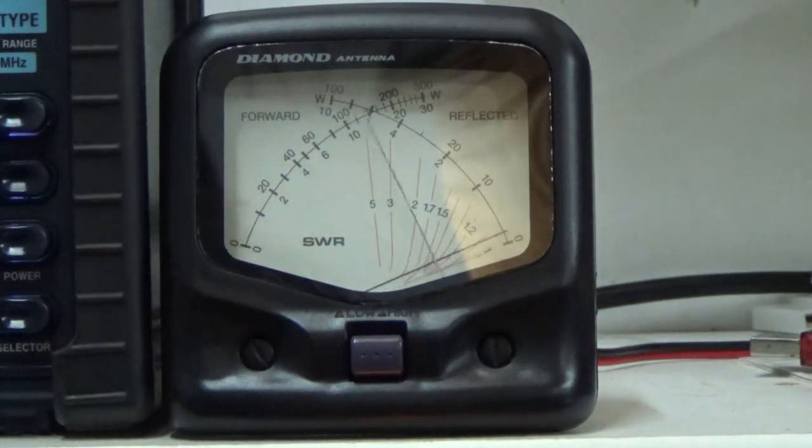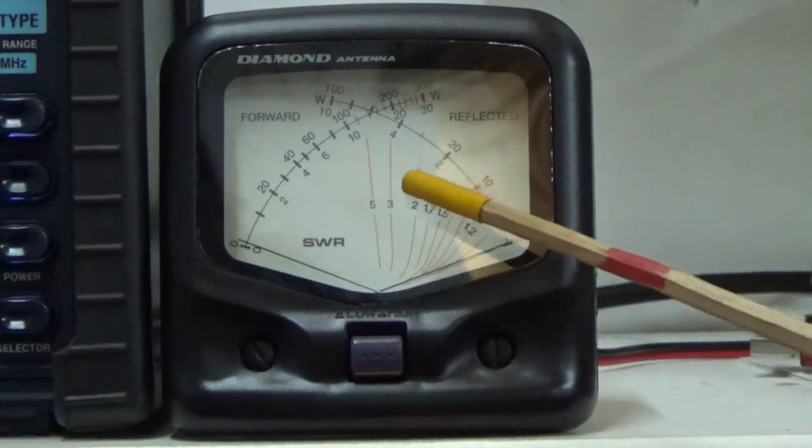This is Kilo India 5 Juliet Uniform Foxtrot, we are losing power. One, two, three, four - we are losing power. Kilo India 5 Juliet Uniform Foxtrot. Ham Radio Deluxe is causing that meter to deflect. I don't think it was even a cold weather problem.